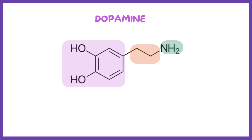So how do we give an IUPAC name for this molecule? First, let's give numbering to the benzene ring as well as to the ethyl chain. Start numbering from the para-hydroxy group.